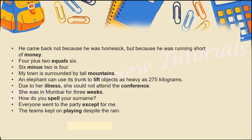First question: 'He came back not because he was homesick but because he was running short of ___.' The answer is 'money.' Second question: 'Four plus two = ___.' The answer is 'six.' Third question: 'Six minus two is ___.' The answer is 'four.' Fourth question: 'My town is surrounded by tall ___.' The answer would be 'mountains.' Next: 'The elephant can use his trunk to lift objects as heavy as 275 kilograms.'